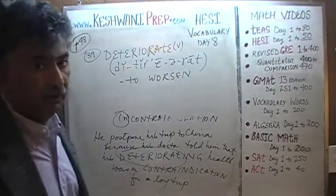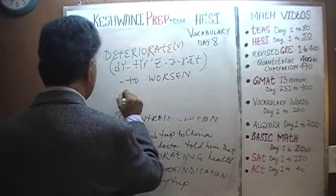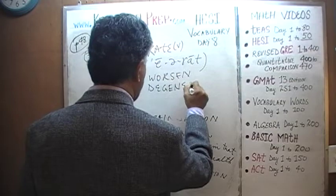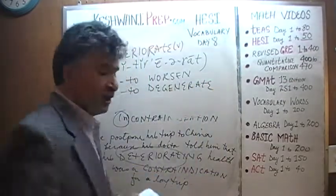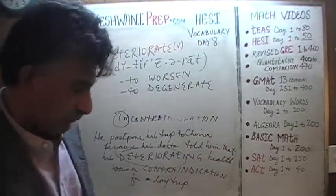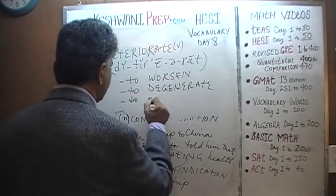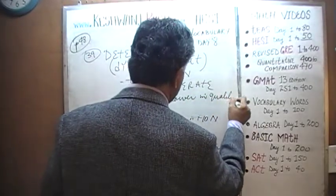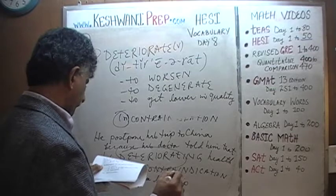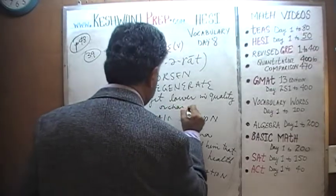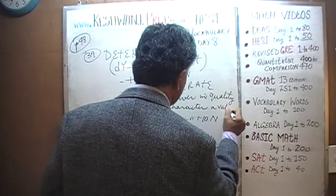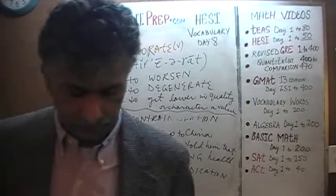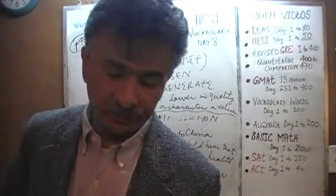To worsen, or if you like, to get worse — to degenerate, to get lower in quality, to get lower in quality or character or value. To get worse in quality means to deteriorate. Do you understand?